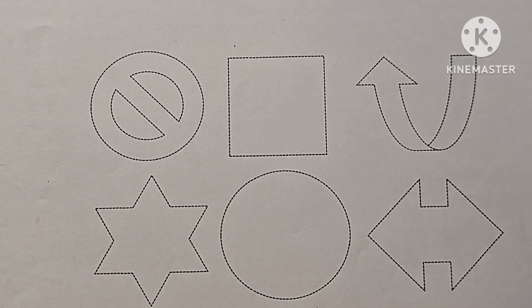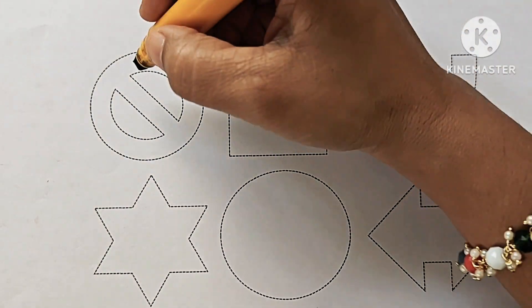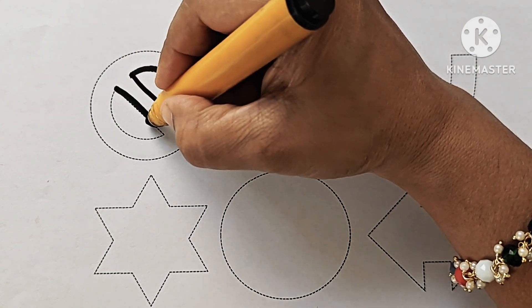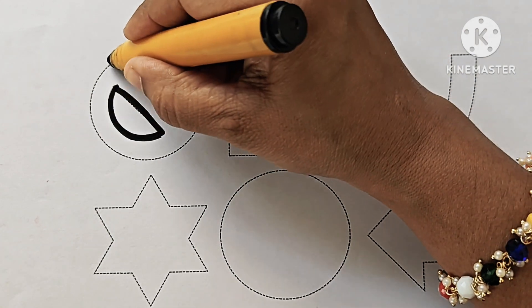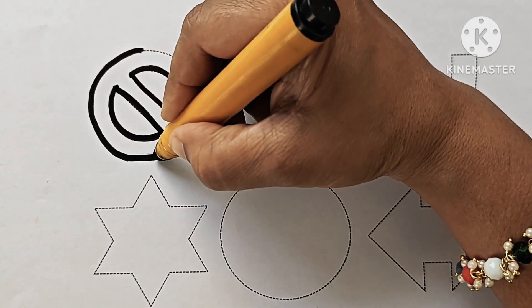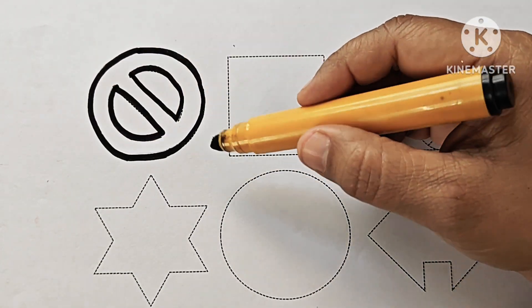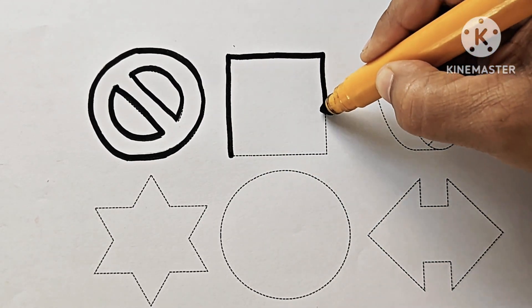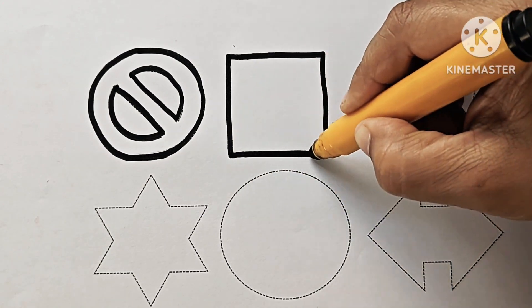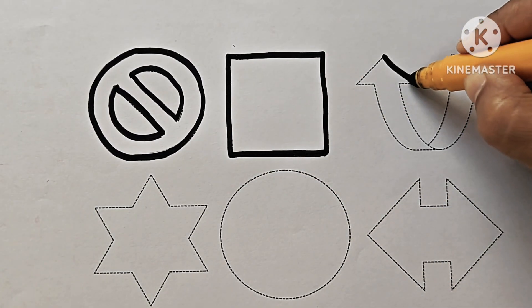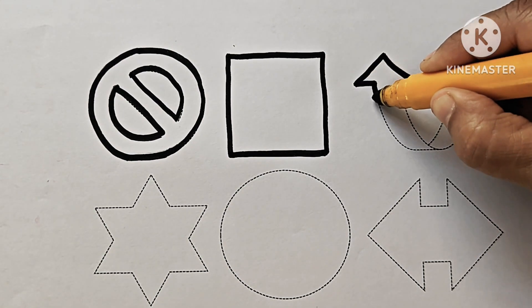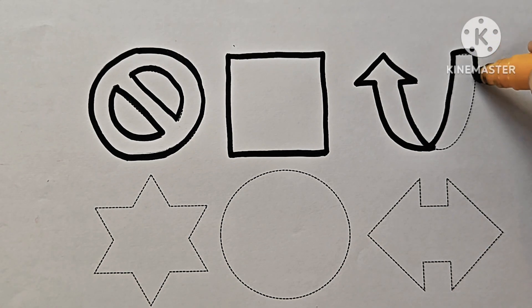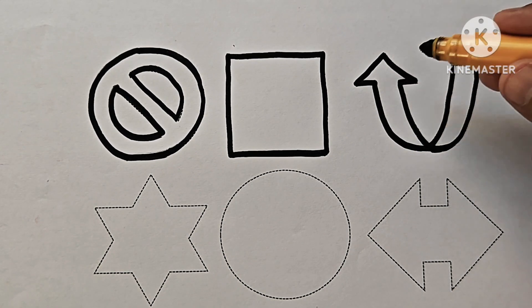Let us draw the shapes and symbols. This is not allowed symbol. This is square. Curved up arrow. Direction is upward.